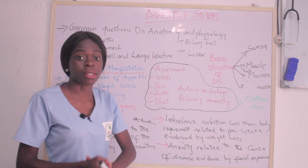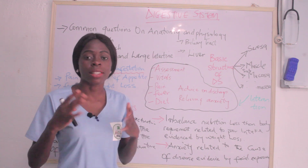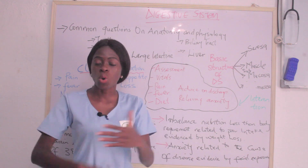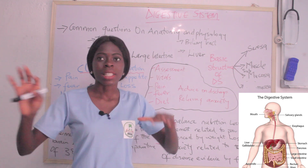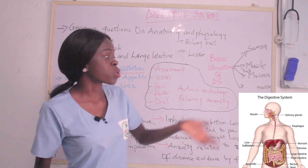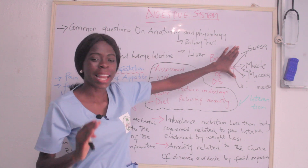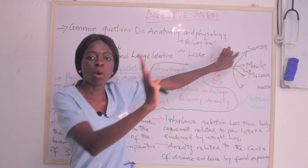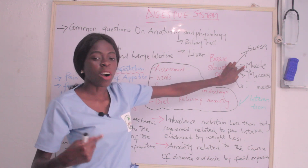That takes us to the basic structure of the digestive system. Sometimes they are likely going to ask you about the basic structure of the digestive system — from the oesophagus downwards: the oesophagus, stomach, large intestine, small intestine, and rectum. These organs have the same basic structure but have been modified at certain points. The basic structure is that these organs share similar layers. The first is the serosa layer — the outer layer, also known as the adventitia. The second layer is the muscularis layer, which contains the muscles.